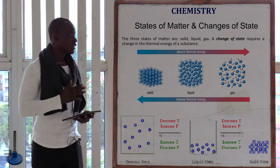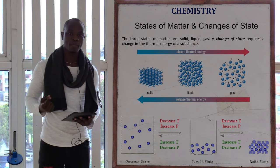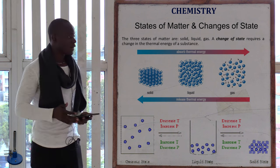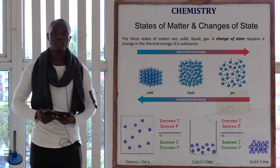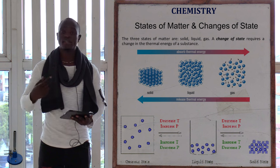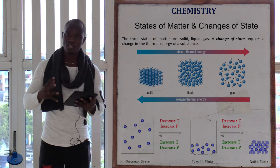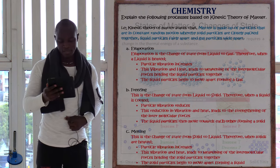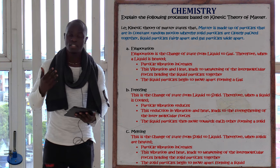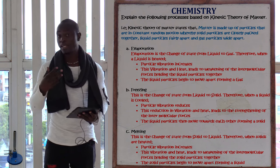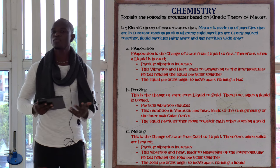In the process whereby solid changes to liquid and then liquid changes to gas, heat is increasing. Whereas in the process whereby gases change to liquid and then back to solid, there is a decrease in temperature. As heat increases, the particles vibrate more and spread apart. As heat decreases, the particles come close together and vibration decreases. Evaporation means the change of state from liquid to gas — that process is called evaporation.